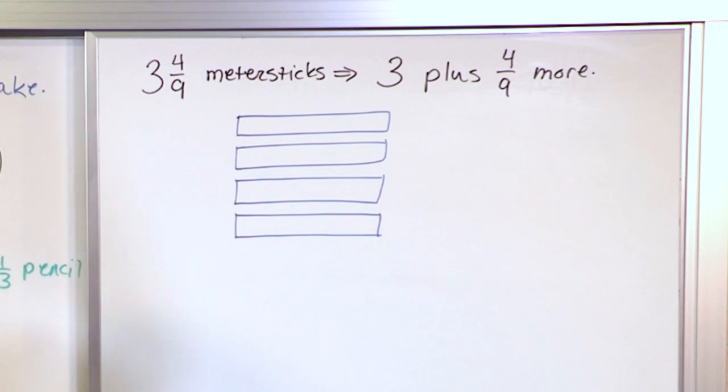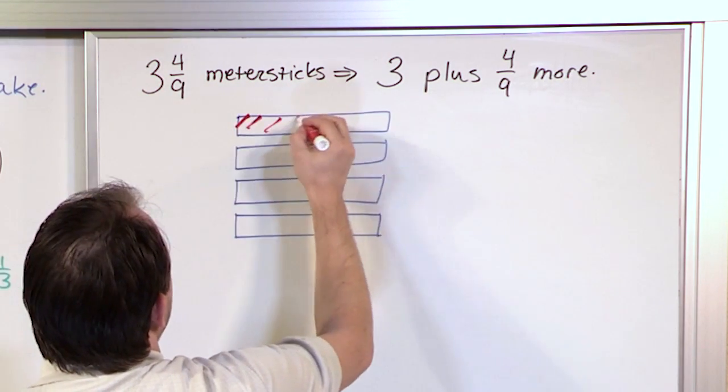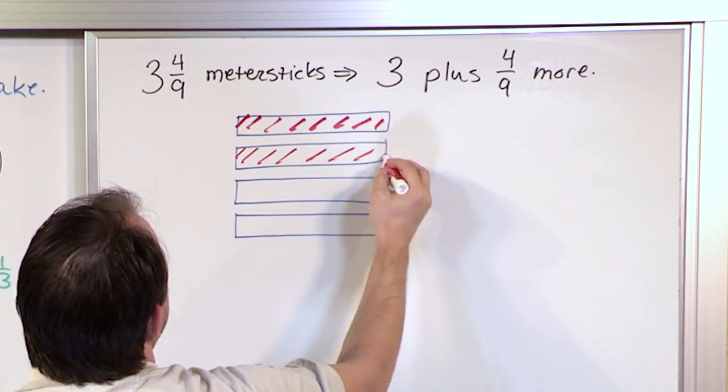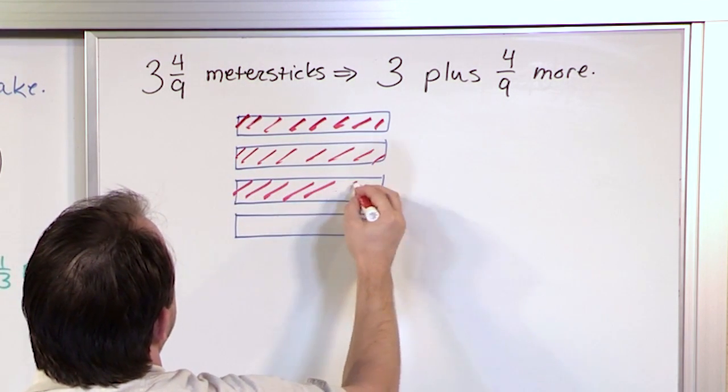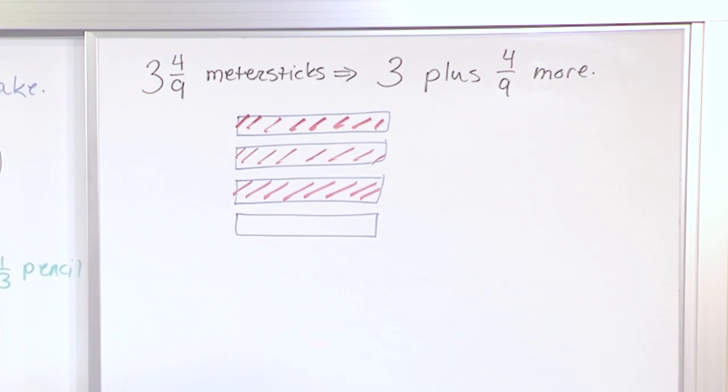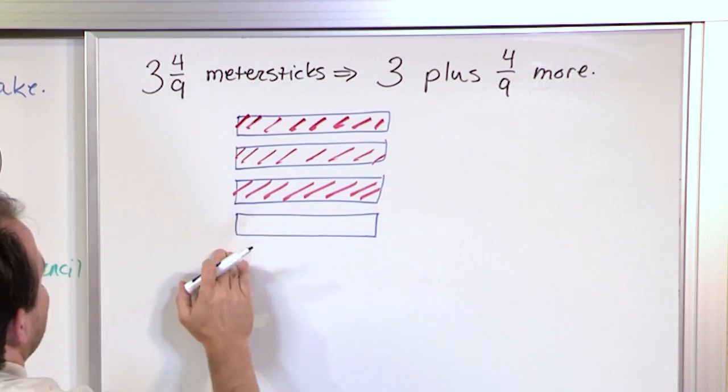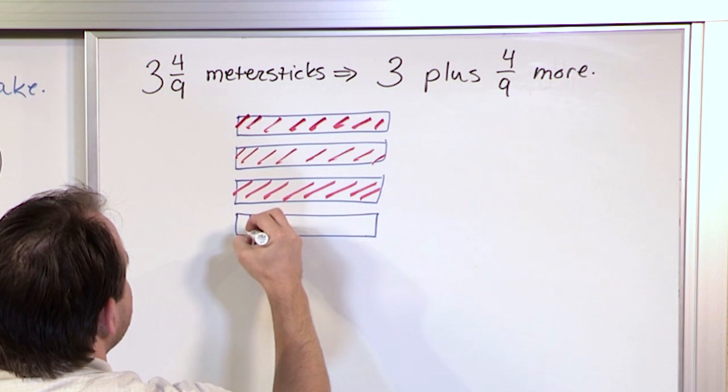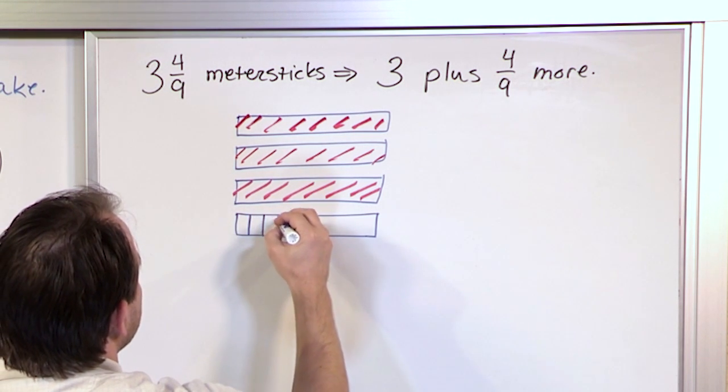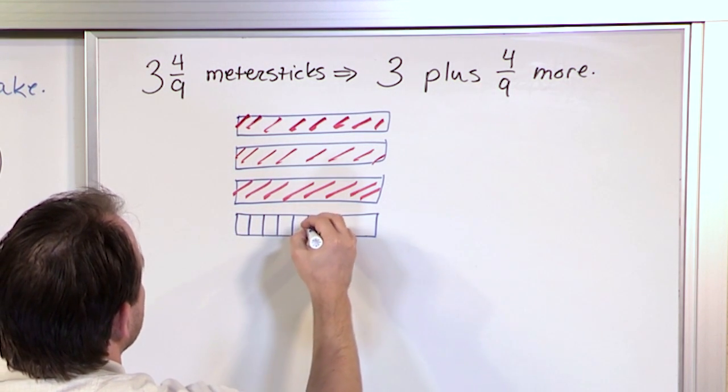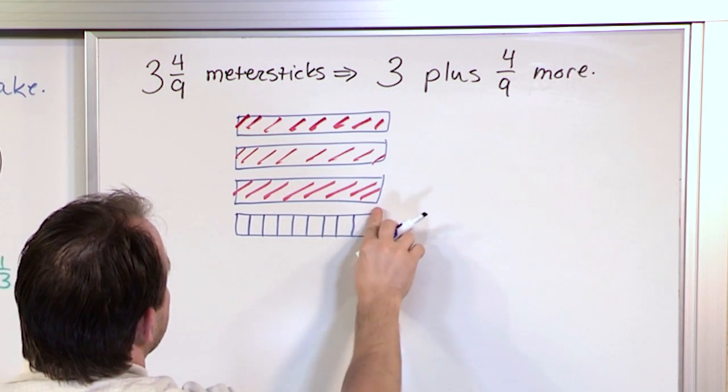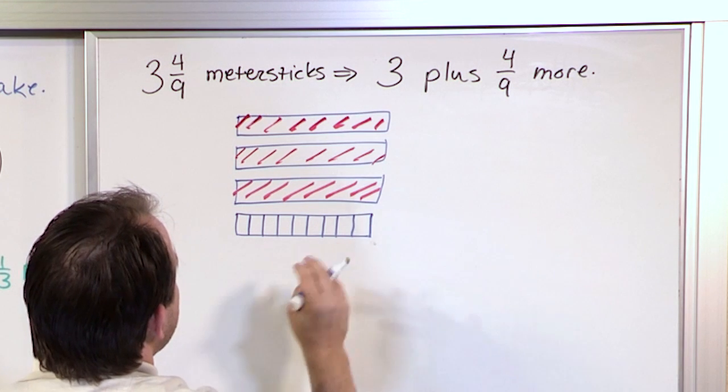So here is meter stick number one. Here is meter stick number one I have. Here's the second one that I have. Here is the third one that I have. Now for the last one, here's my last one. I have to chop it up into nine pieces, which is a little bit tough, but we'll try it. Here's one, two, three, four, five, six, seven, eight, nine.